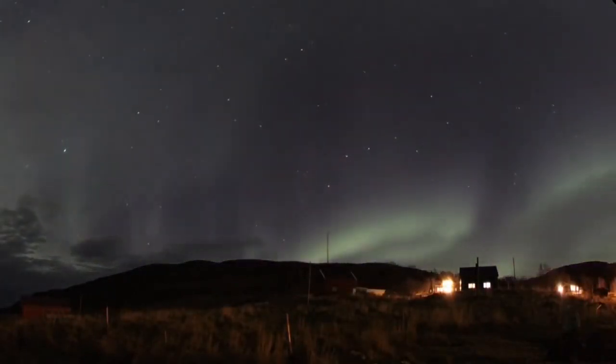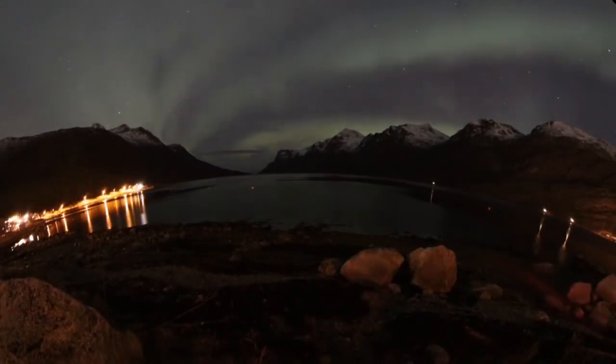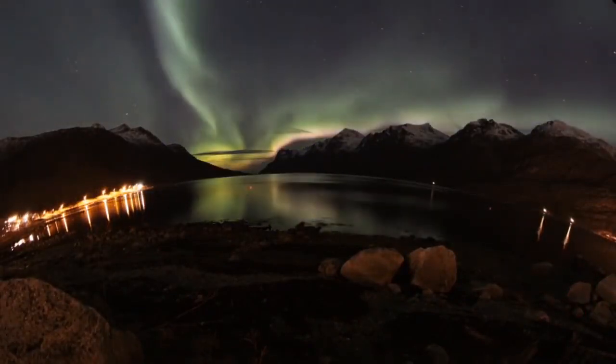Auroras can appear as long, narrow arcs extending overhead from horizon to horizon. From the side, they look like ribbons that kink, fold, and swirl.